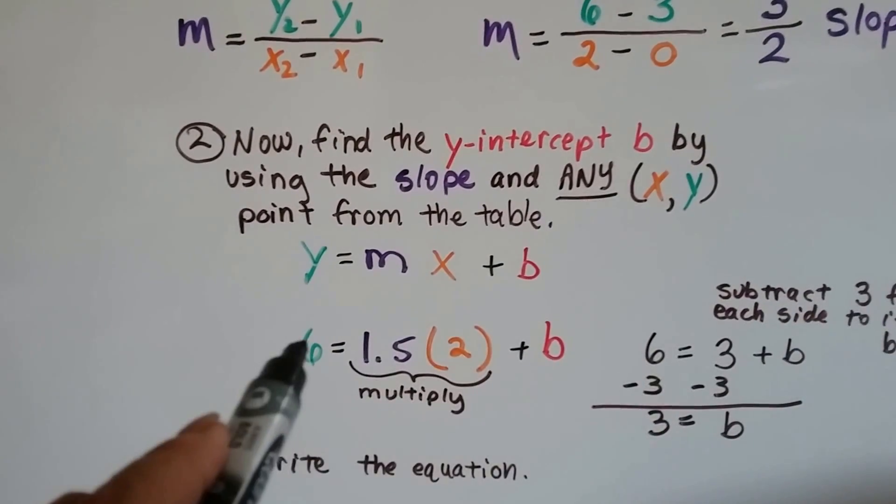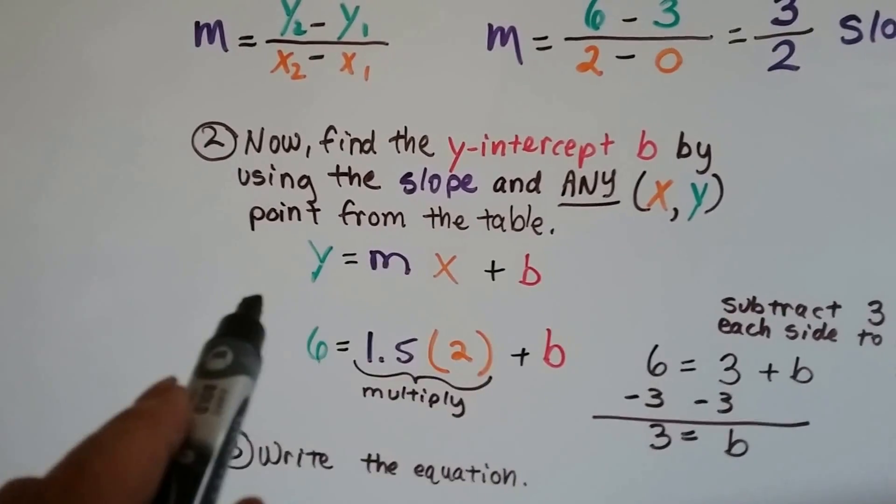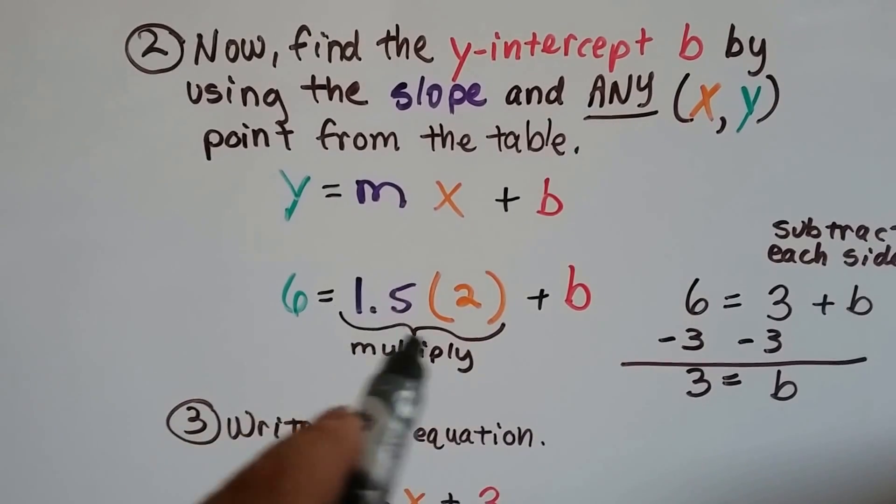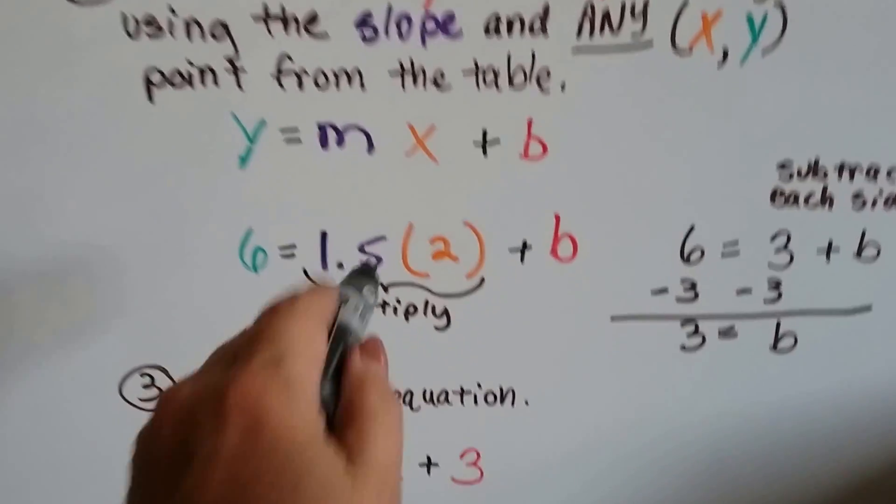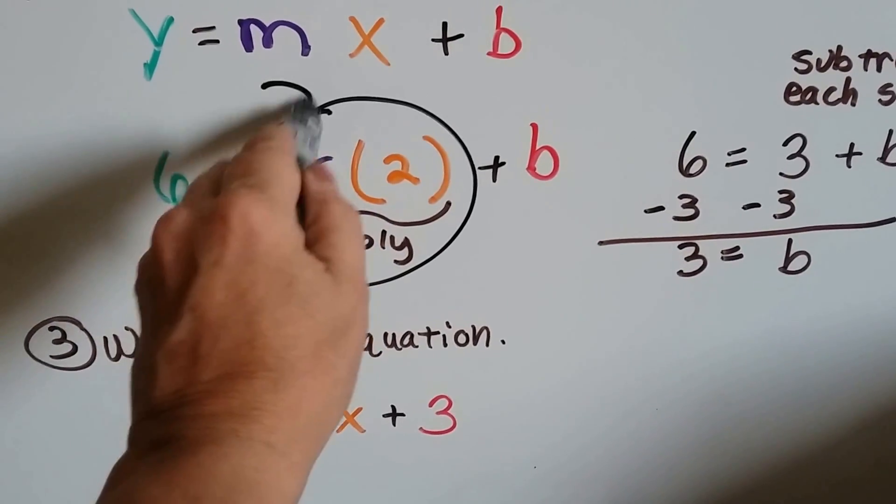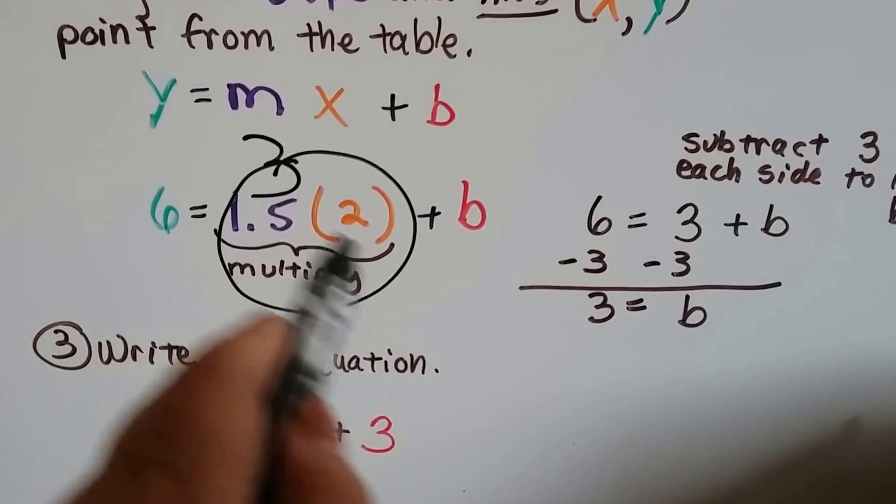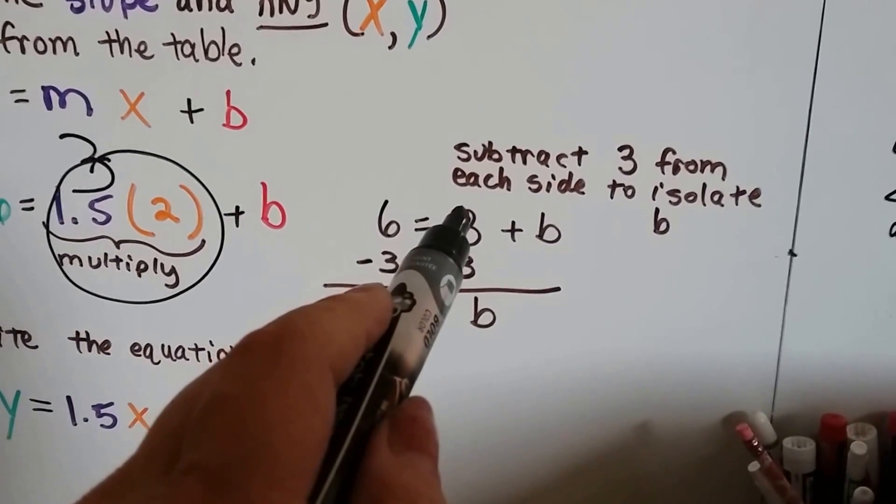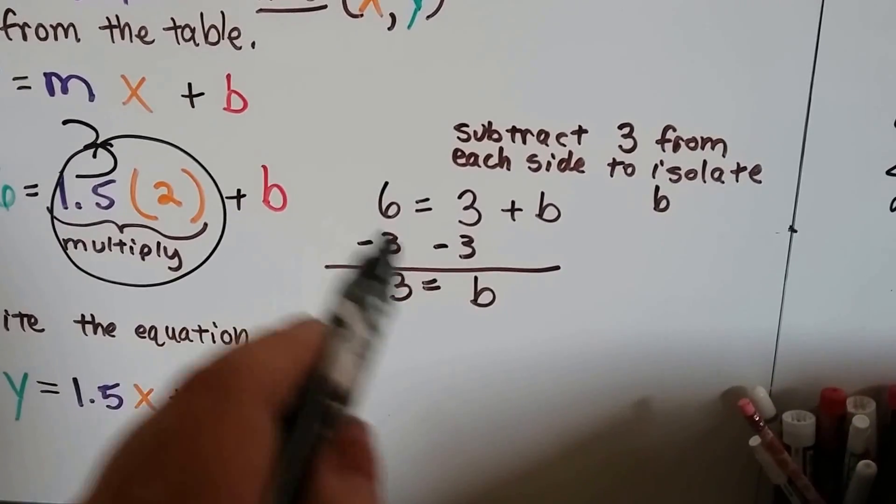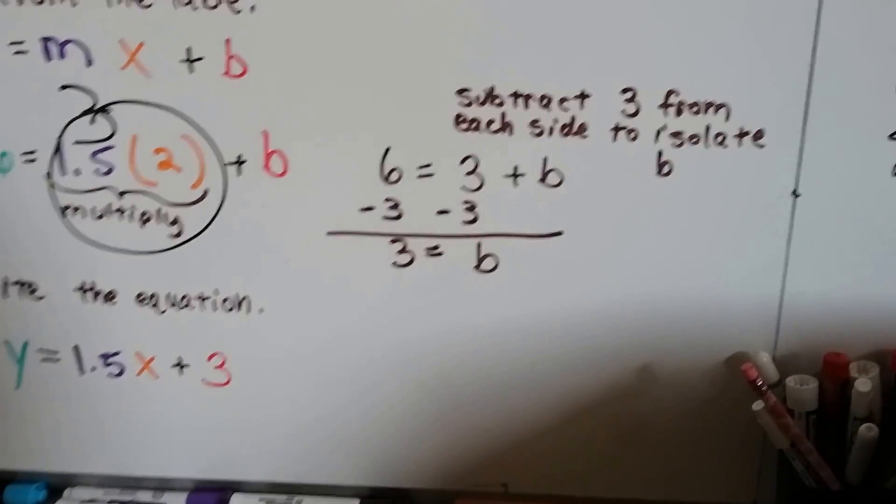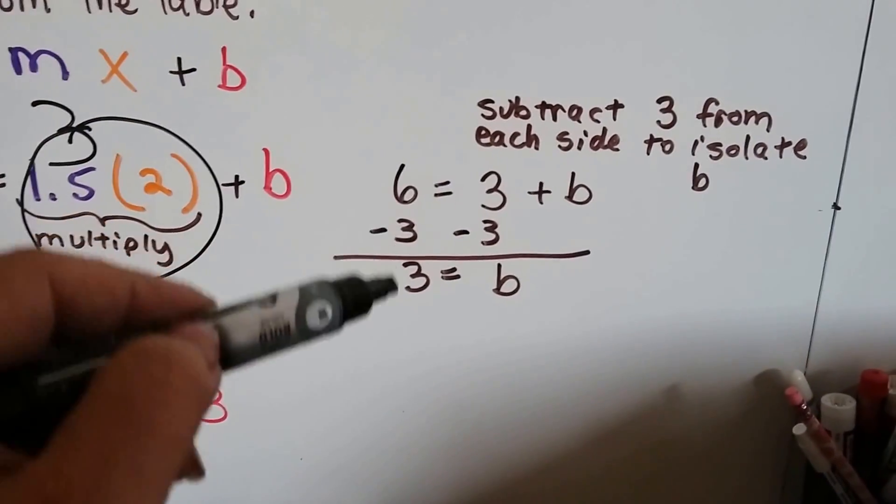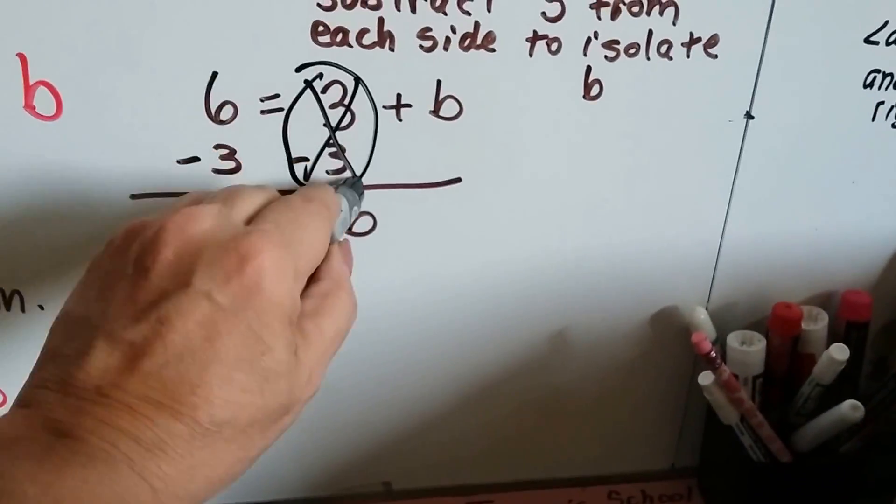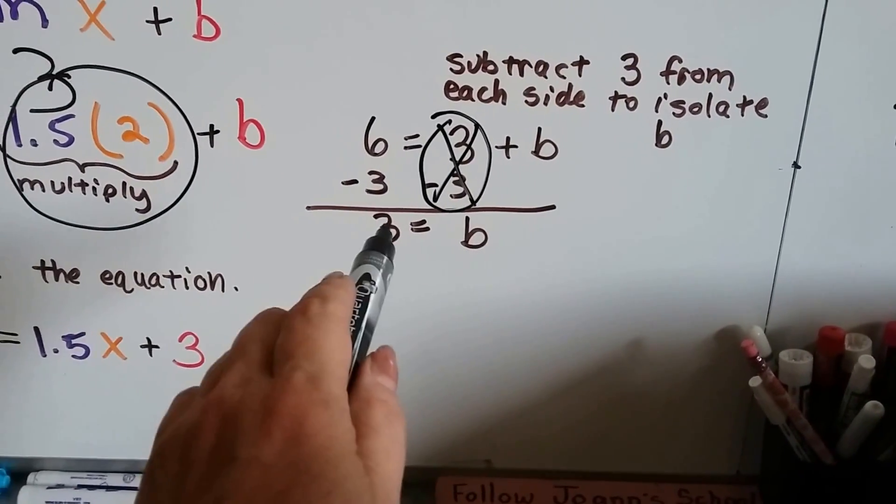So here's our x2 and our y6 all plugged into the equation. And I color coordinate so you can see it. And I multiply these two together. And 1.5 times 2 is a 3. So now we know this is 3. So I've got 6 equals 3 plus b. So because this is a positive 3, I'm going to subtract 3 from each side of the equal sign to isolate b to one side. 6 take away 3 is 3. And positive 3 take away negative 3 makes a zero pair, so this cancels each other out. And we know that our y-intercept b is a 3.